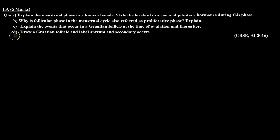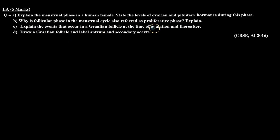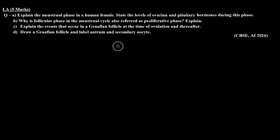So, A part mein human female menstrual phase ko explain karna hai aur batana hai ki menstrual phase mein ovarian aur pituitary hormones ka level kaisa hota hai. B part mein batana hai ki follicular phase ko proliferative phase bhi kyun bolte hain. C part mein batana hai ki ovulation ke time aur ovulation ke baad Graafian follicle ke saath kya hota hai. D part mein Graafian follicle ka diagram draw karna hai aur usme antrum aur secondary oocyte ko label karna hai. So let's check the answer.